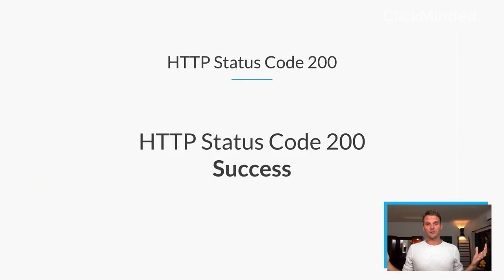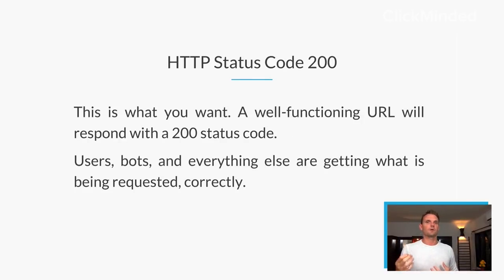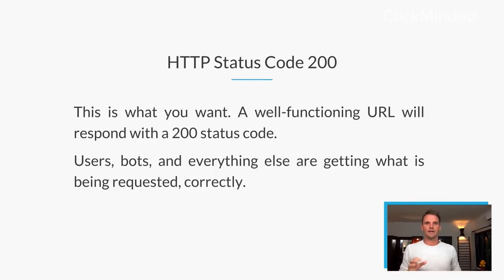Now I want to talk about some of the most important status codes for digital marketing — the good ones, the bad ones, and the ones you need to solve right away. Getting the technical stuff right is super important. It's absolutely devastating to put all this work into your site or digital marketing strategy only to have it messed up by technical status code issues. So let's talk about the good stuff first: the HTTP status code 200. This means success — a well-functioning URL will respond with a 200 status code. Users, bots, everything went perfect. You want 200 requests — this is good news.